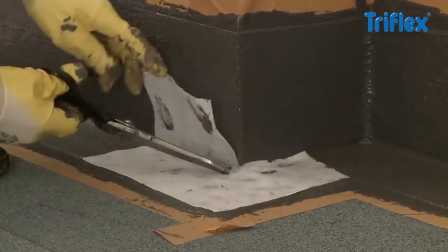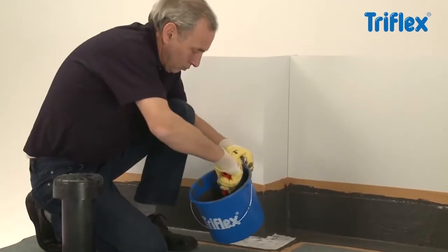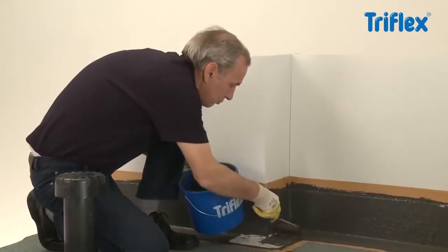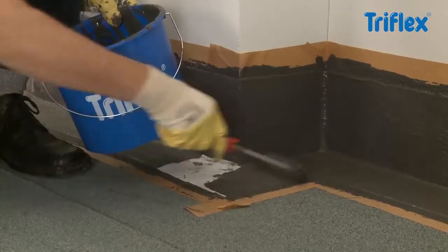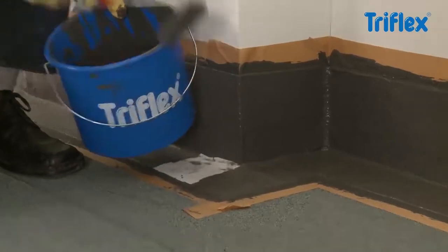An additional shaped fleece cutout is applied to each outer corner while the waterproofing is still wet. These should overlap by at least 5 cm to the other fleece sections.